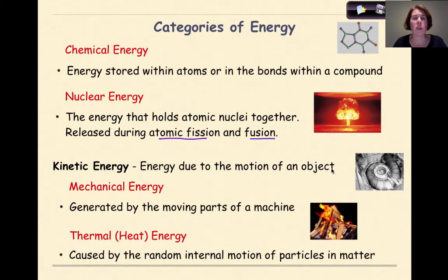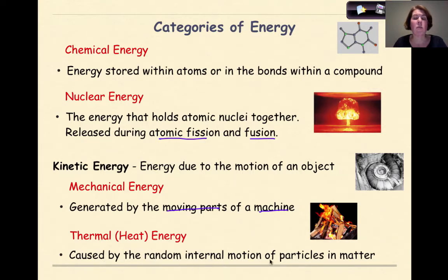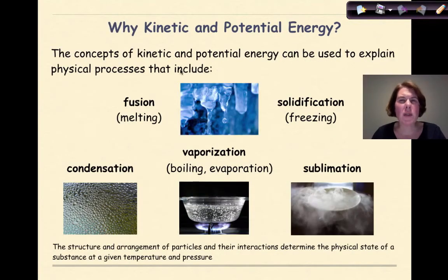The first type of kinetic energy is mechanical energy, generated by the moving parts of a machine. The other type is thermal heat energy, caused by the random internal motions of particles in matter — we can see that with this fire right here.